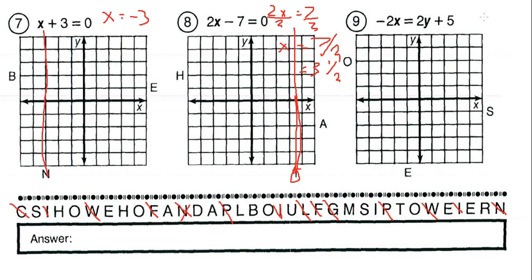Last question: add 2x and subtract 2y, giving negative 2y equals 5 plus 2x. Dividing everything by negative 2 gives y equals negative 5/2 minus x. The y-intercept is negative 2½, and the slope is negative 1. Drawing that line with a slope of negative 1, it goes straight through letter O.